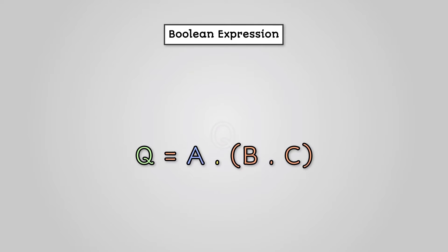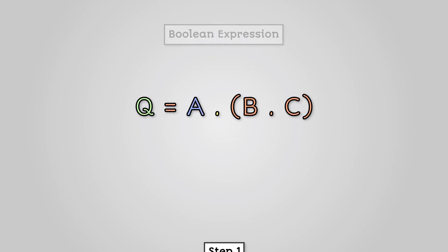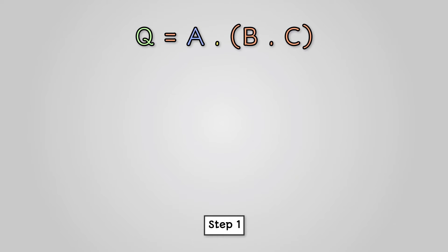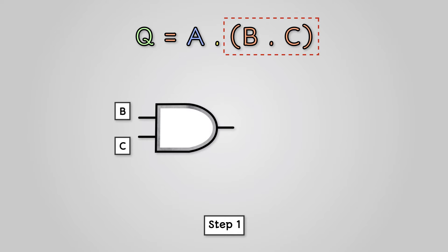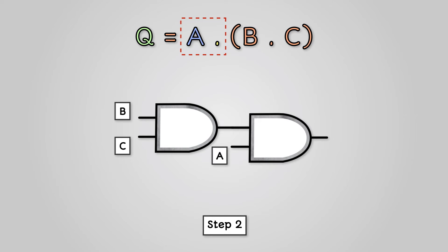Our first boolean expression is Q equals A AND (B AND C). Let's work through producing this circuit step by step. Step 1: Start with the brackets — this is the B AND C part. Here we draw a simple AND gate with the two inputs B and C. Step 2: Add the outer expression — this is the AND part. Here the result of B AND C is used as an input on another AND gate with A. That's our logic circuit complete.